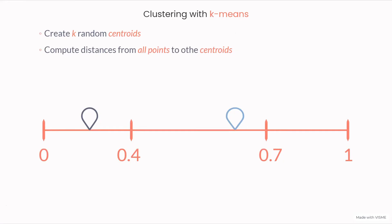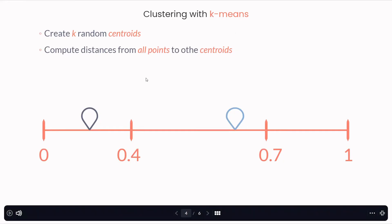I suppose at random that these are the centroids of my problem. Next, I will compute the distance from all points to the centroids. I'm going to make an operation of computing the distance, whatever it is, from all the points from 0, 0.4, 0.7 and 1 to both centroids that you create.